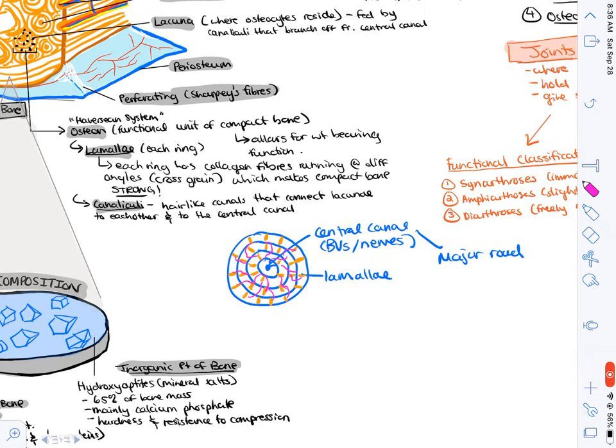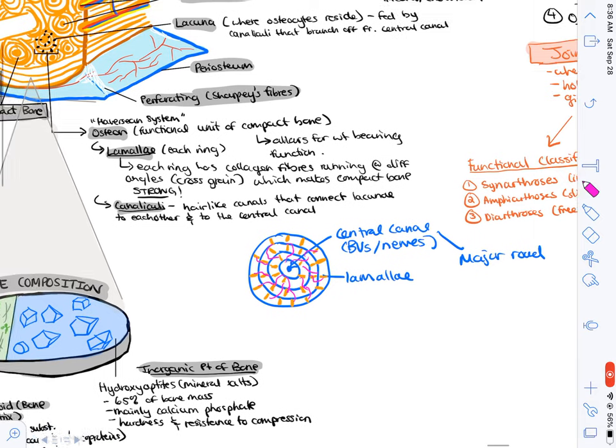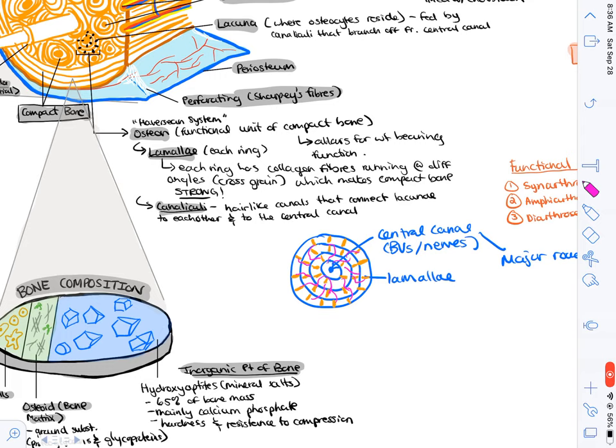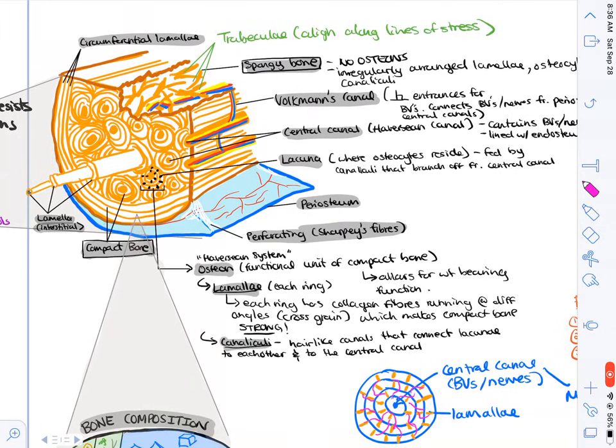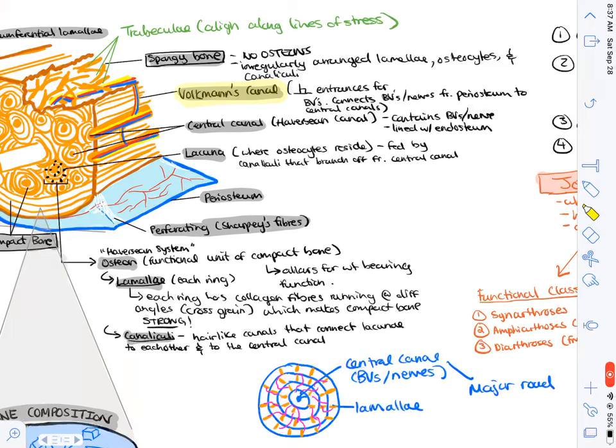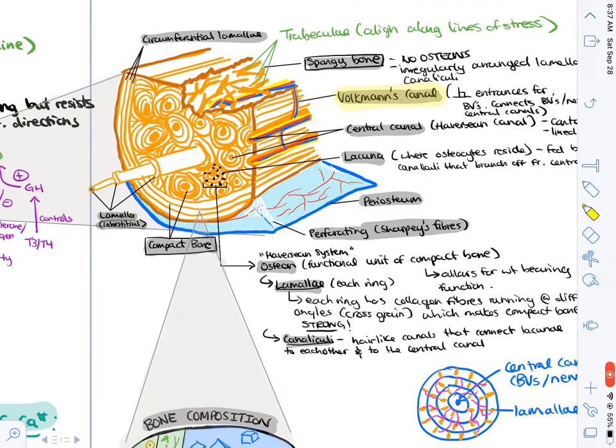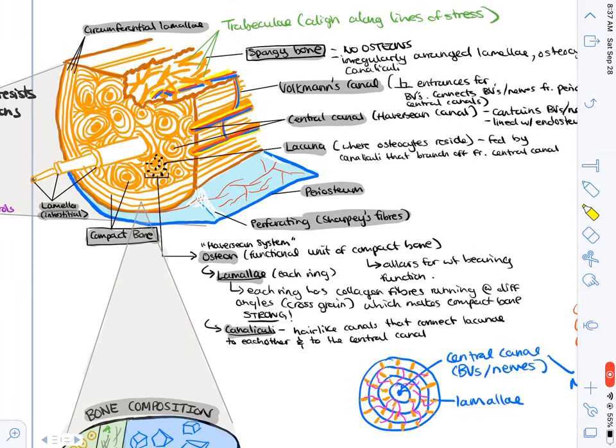That is the organization of compact bone. Remember we said the central canal has the blood vessels and nerves to supply these osteocytes. We also need a way to connect the central canal, and we do that through Volkmann's canals. These are perpendicular entrances for blood vessels, and they connect all the central canals together. They also connect to the periosteum, which is highly innervated and vascularized. You can think of periosteum as where the blood source is coming from, and then each central canal is the delivery of the blood source to the specific neighborhood of osteocytes within an osteon. The Volkmann's canals are the canals that connect central canals together.